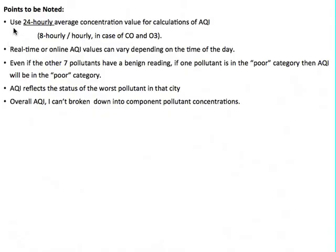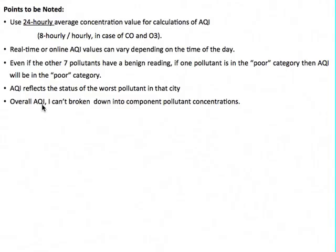Some points to note: Use 24-hourly average concentration for AQI calculation; for carbon monoxide and ozone, 8-hourly or hourly values can be used. Since real-time pollutant values vary diurnally, AQI values also vary accordingly. Even if seven pollutants have better readings and one pollutant has a poor reading, the AQI value falls under the poor category. Since AQI is not a synergistic parameter, it reflects the status of the worst pollutant in the city. Since AQI is derived from the maximum operator method, the overall AQI cannot be broken down into component pollutant concentrations.